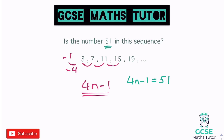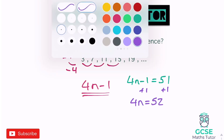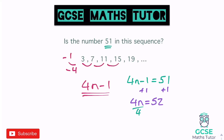We solve the equation 4n minus 1 equals 51. Adding one to both sides gives 4n equals 52. Dividing by 4, n equals 13. So substituting 13 gives us 4 times 13 minus 1: that's 52 minus 1, which equals 51. Since n equals 13 is a whole number, yes — 51 is in the sequence, and it's the 13th term.